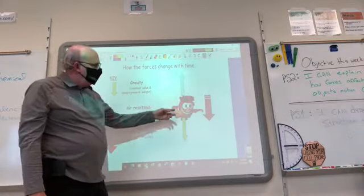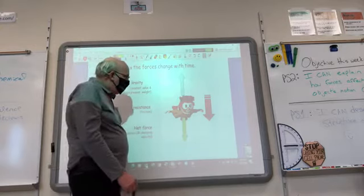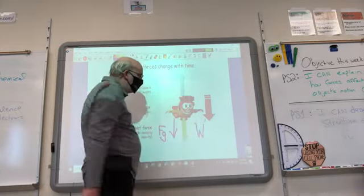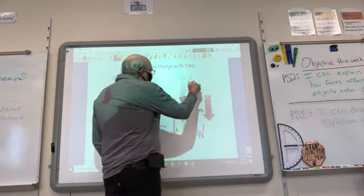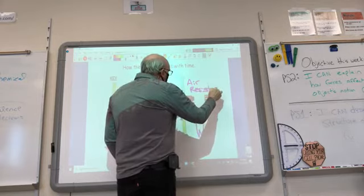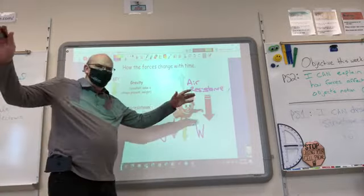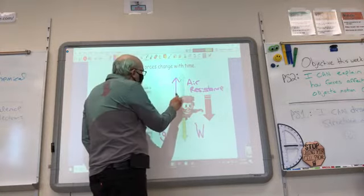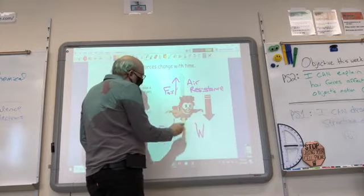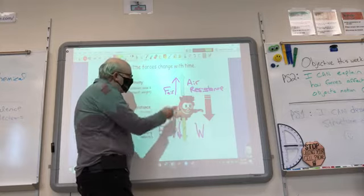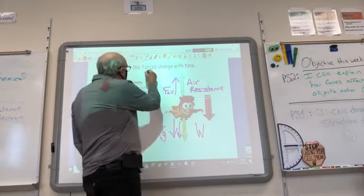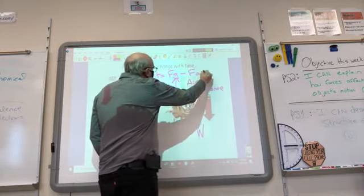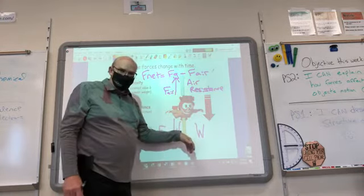Looking at it graphically, here's an individual — a skydiver — falling through the air. He's got a force going down due to gravity, which you could call weight, abbreviated capital W. And there's some air resistance forcing the individual upward. Obviously he's not floating — gravity is greater than air resistance. But because these forces go in opposite directions, you subtract them. So the net force equals the force of gravity minus the air resistance.